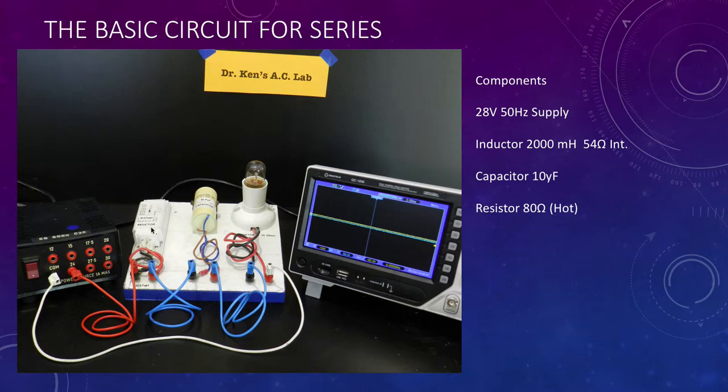There are three devices - an inductor, a capacitor, and a lamp as a resistor. As you can see if you follow the red wire, it's connected to the inductor then to the capacitor and then to the resistor and back to the supply. Therefore it is all connected in series.